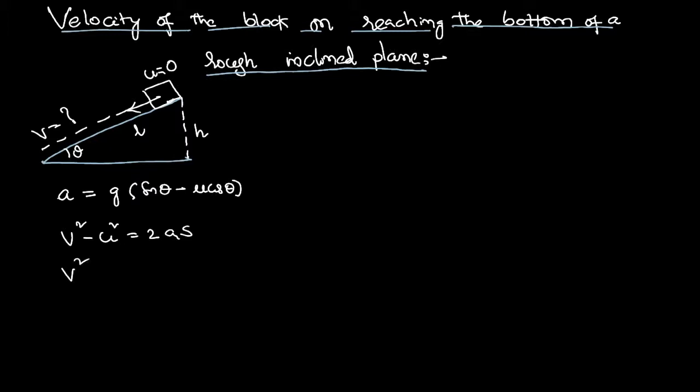By substituting the known data we have to calculate v squared. U squared equals 0. We know that A equals g of sin theta minus mu cos theta, and s is the length of the inclined plane.